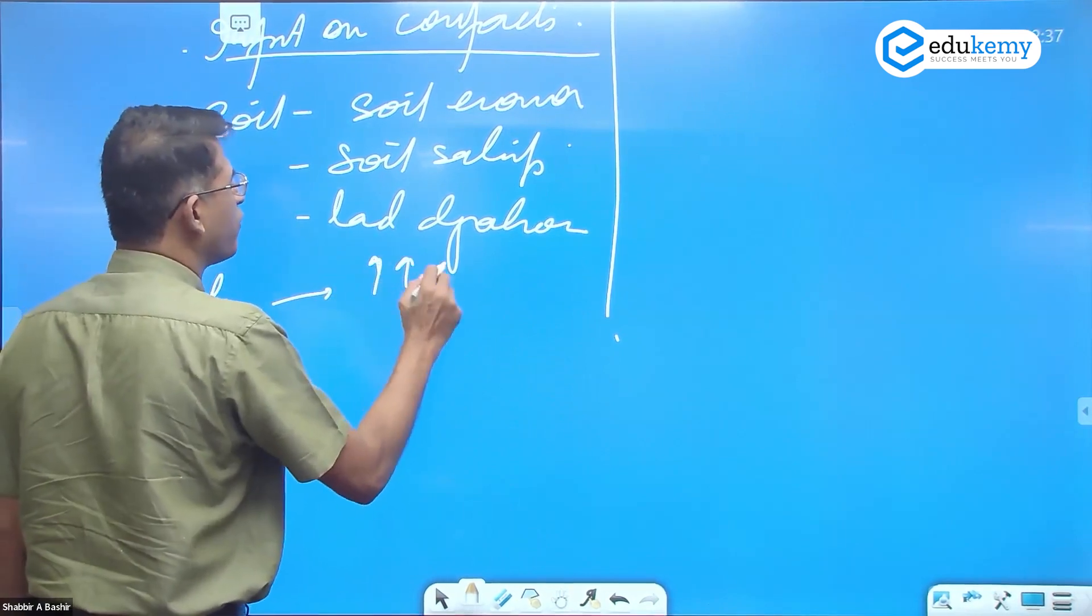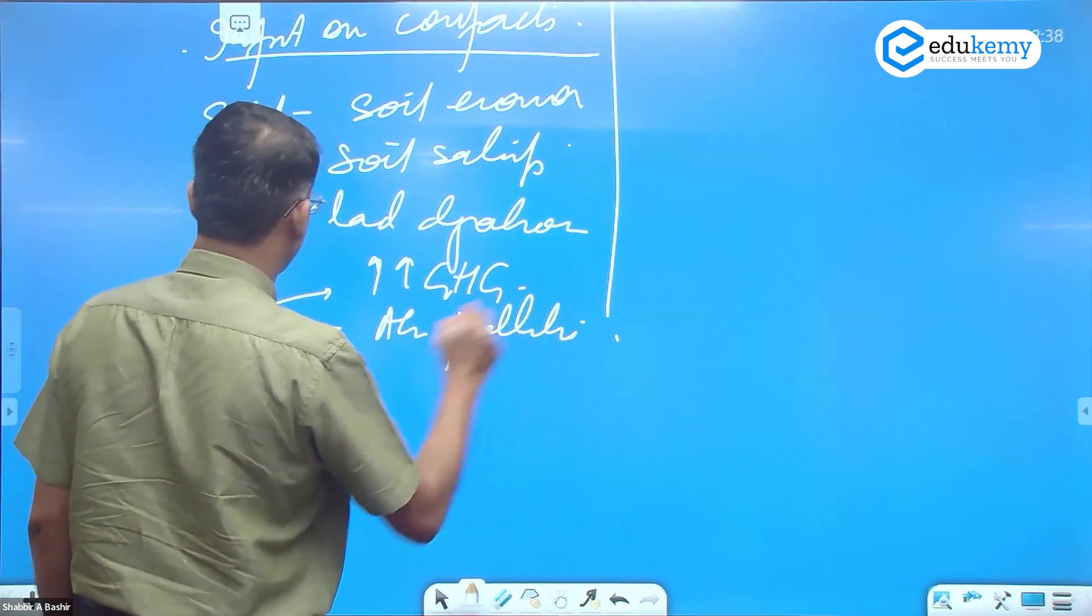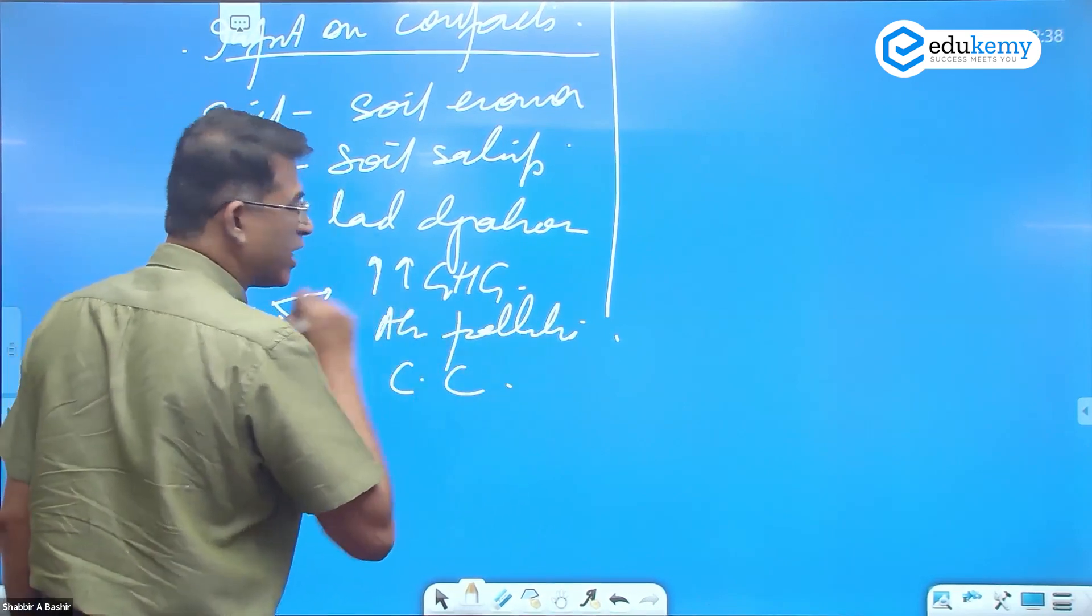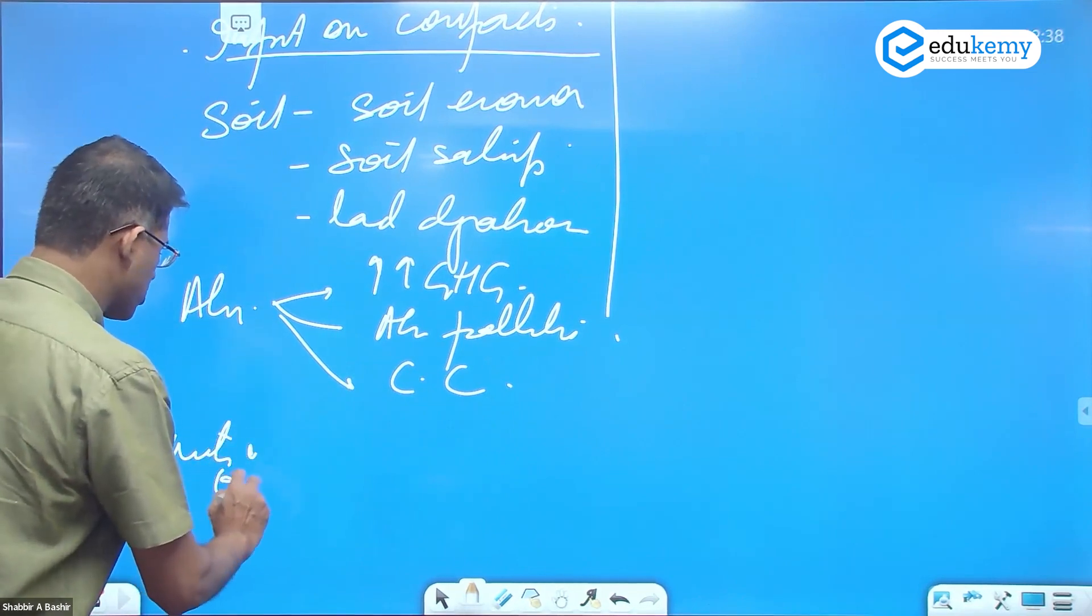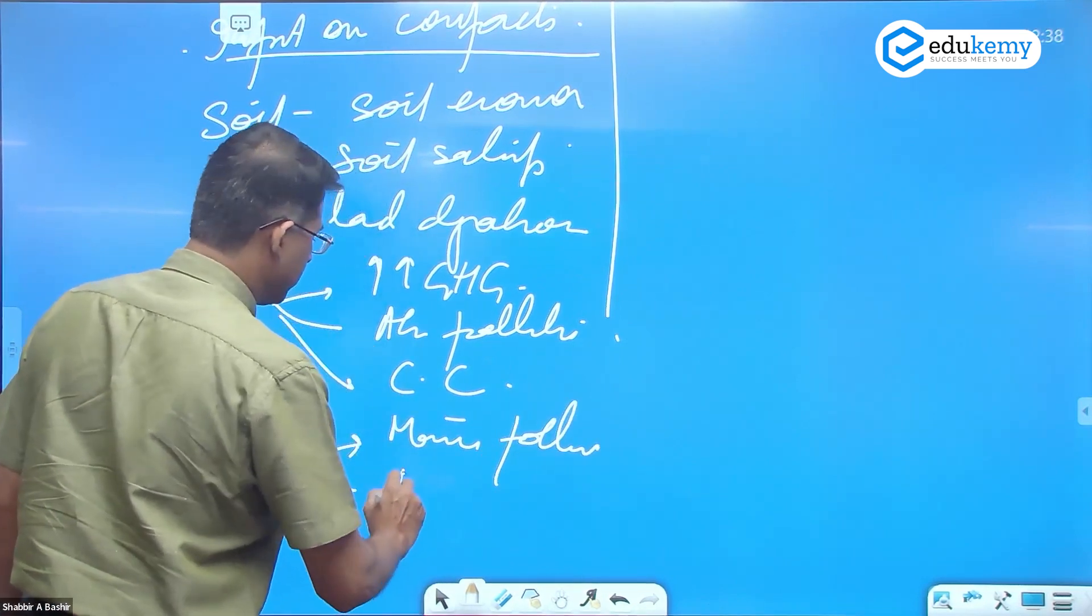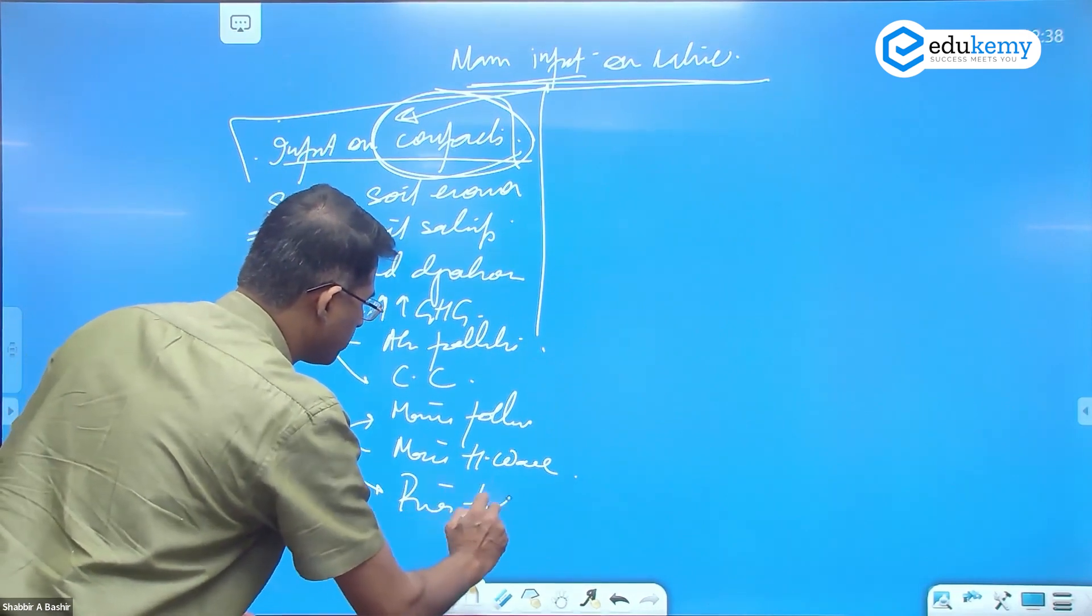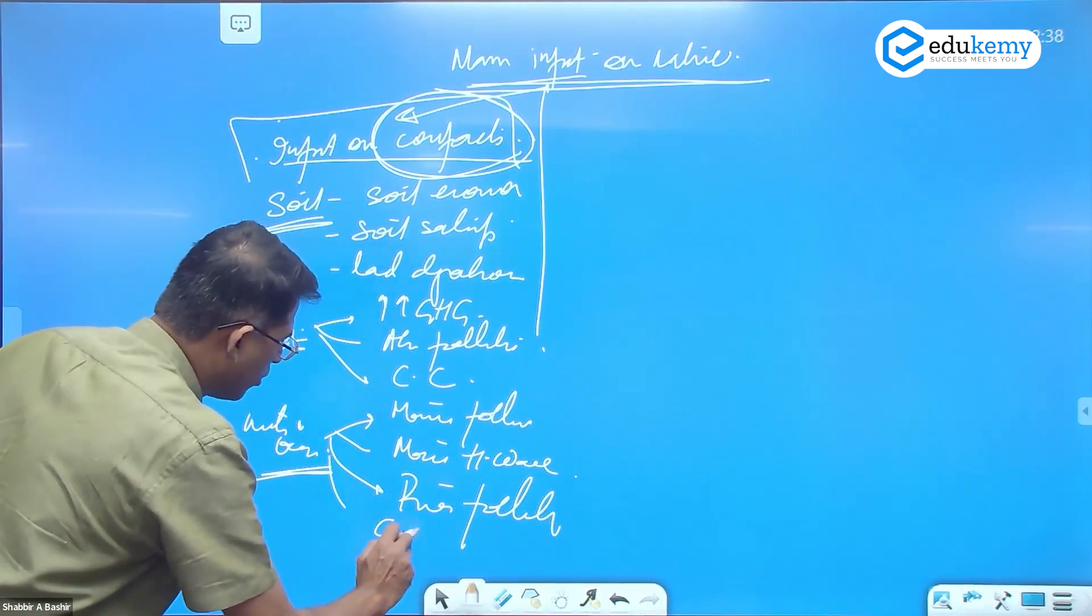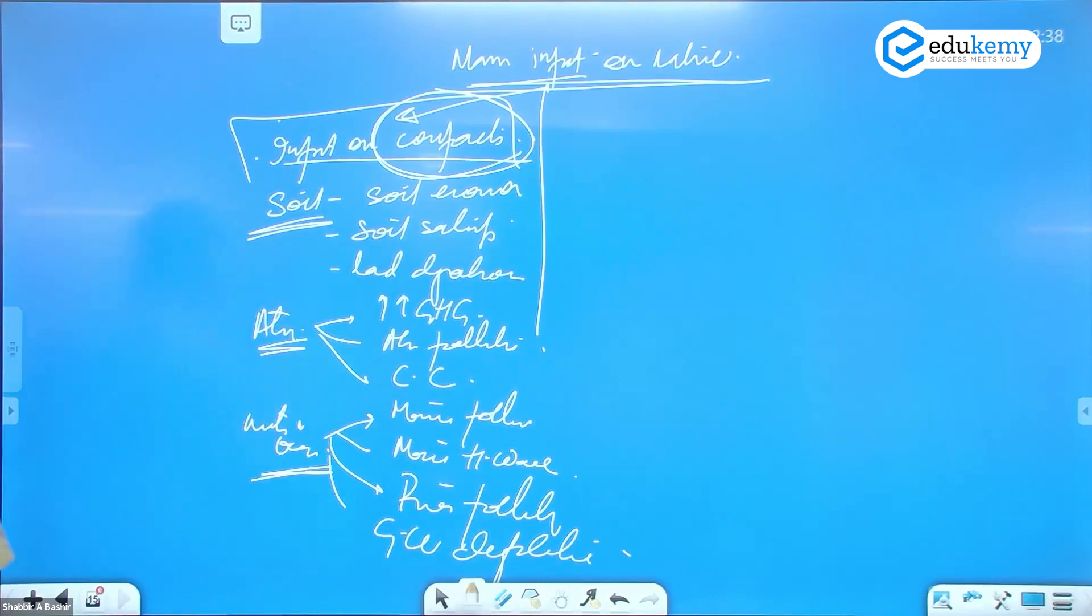For water and the oceans, there is marine pollution, marine heat waves, river pollution, and groundwater depletion. These are all types of disruption, and you can go on listing them.